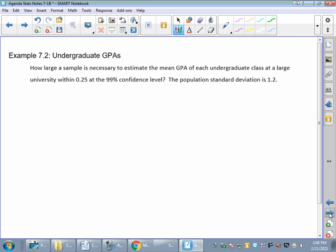So I'm just going to start thinking about my formula. It's n equals, right? I need to know my z of alpha over 2. I need to know my sigma, and I need to know my margin of error.